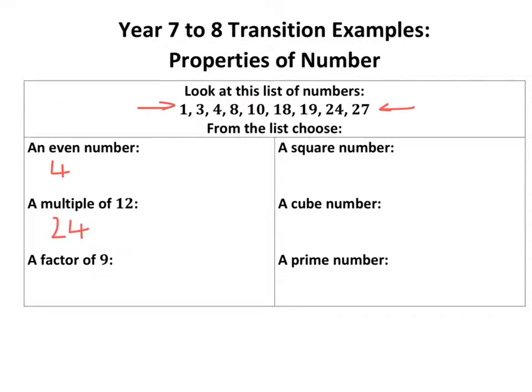The common mistake here is to put three and four or something like that for a multiple of 12. Three and four are actually factors of 12, so just be a little bit careful there. A factor of nine would be three or one.